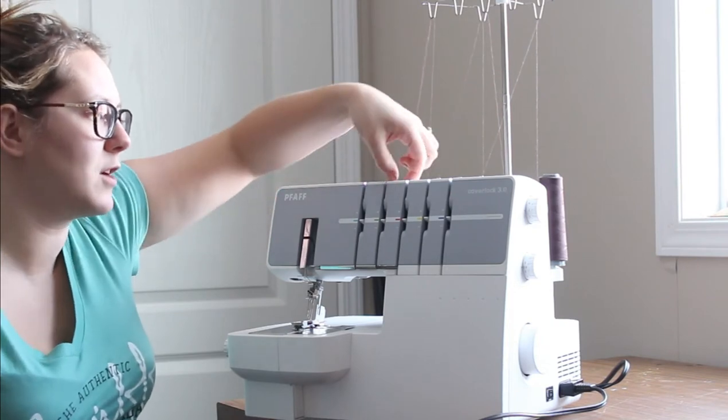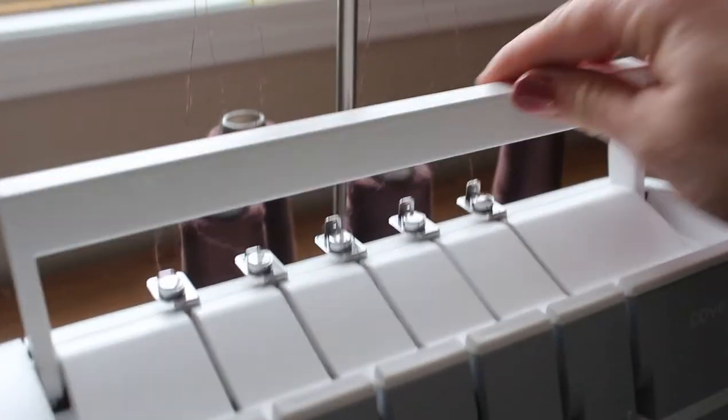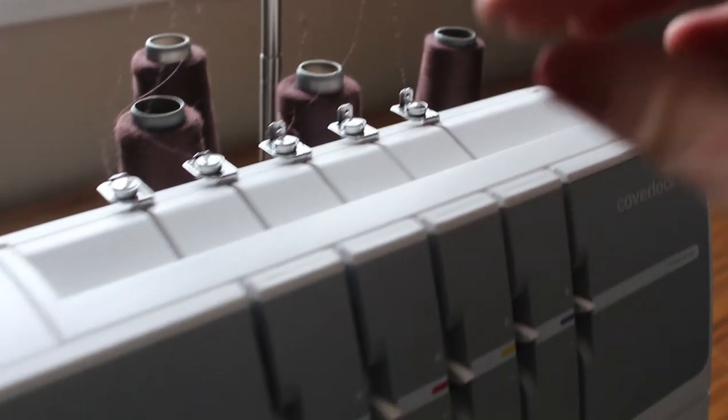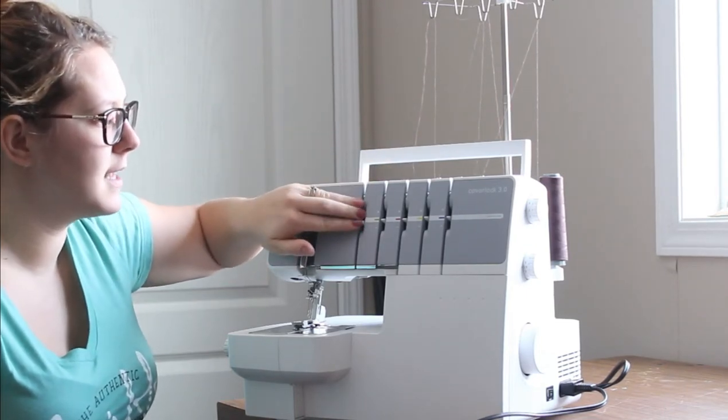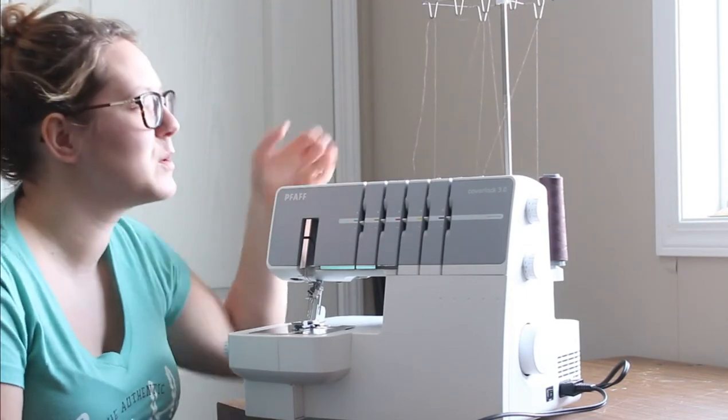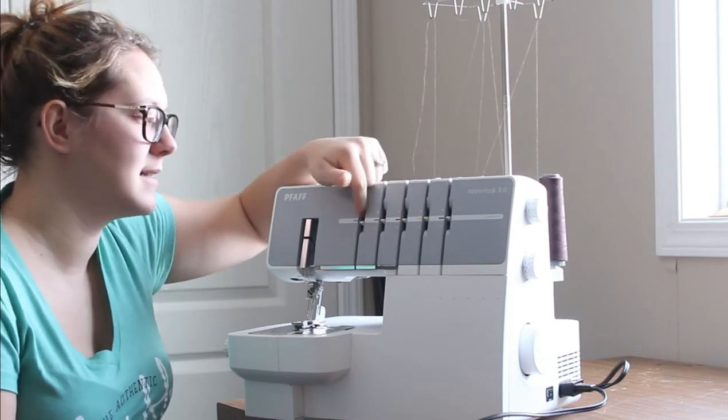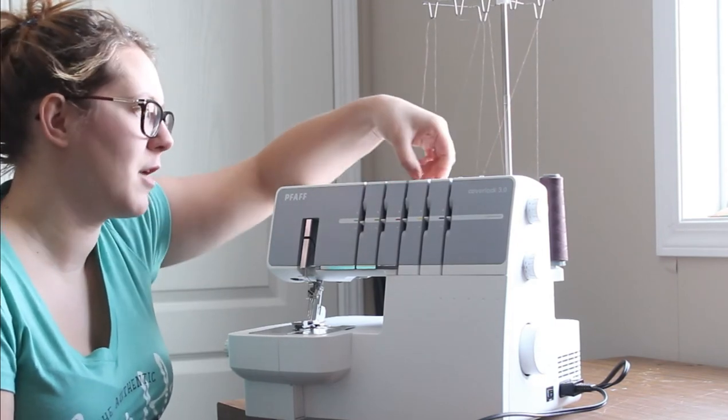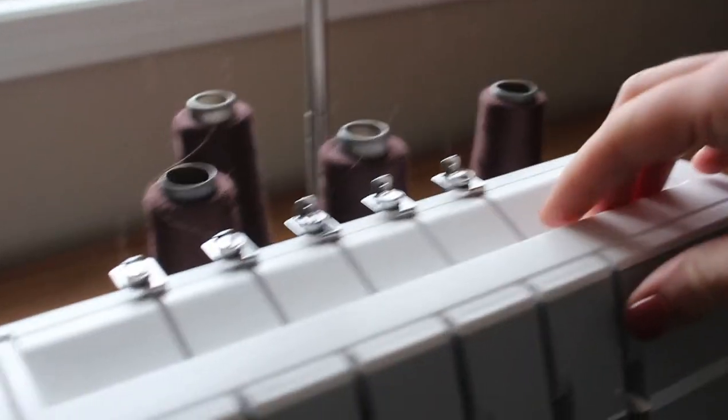The only other thing I really don't like about this is that the handle goes right over top of the threads. When you're threading, the handle has to be up and you have to go behind the handle and then into your thread guides. There's been times where I've gone over top and then it doesn't get in the tension discs properly, and that gets to be quite frustrating because then you have to re-thread.